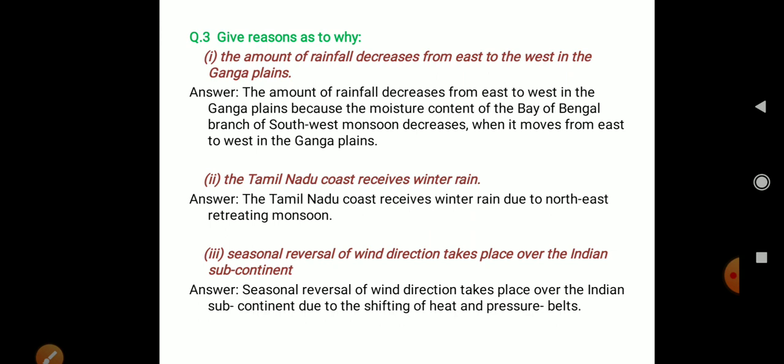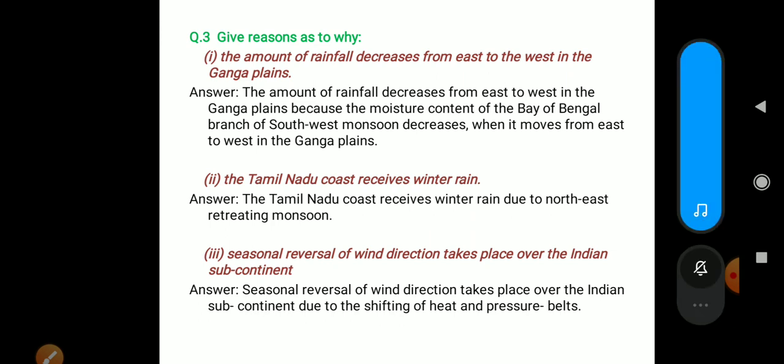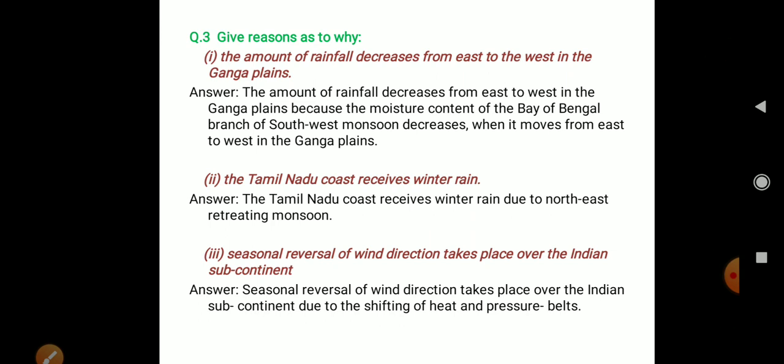Next, question number 3: Seasonal reversal of wind directions takes place over the Indian subcontinent due to the shifting of heat and pressure belts.